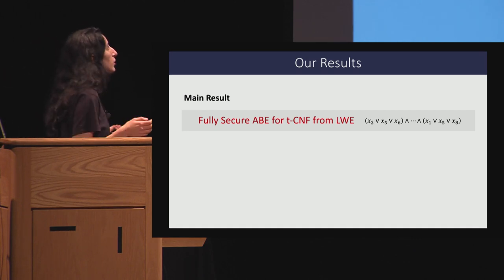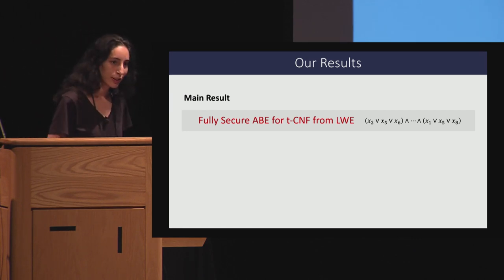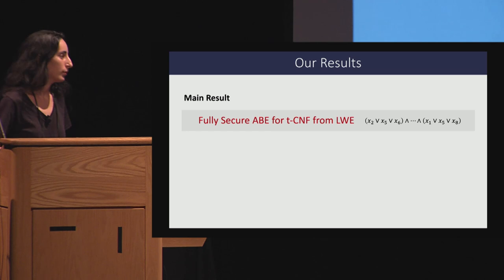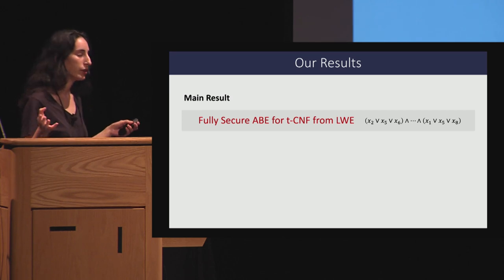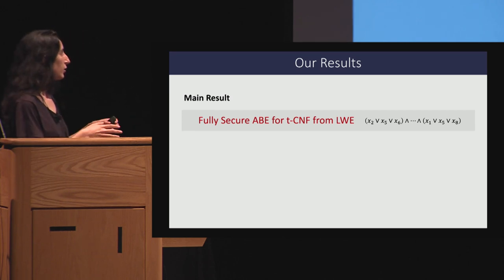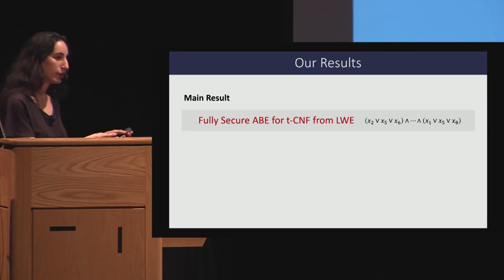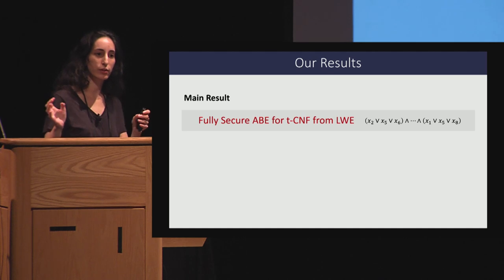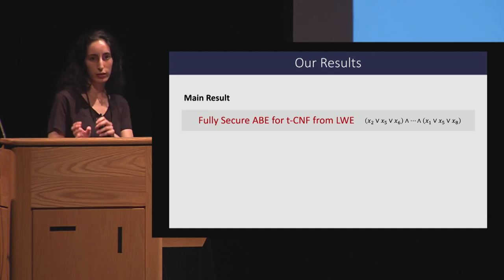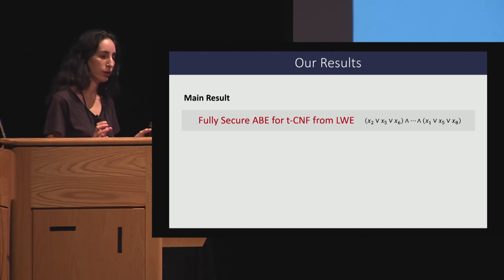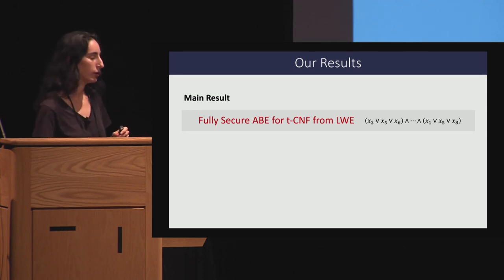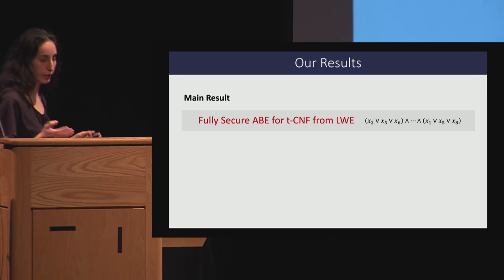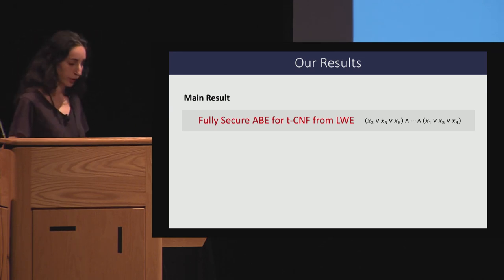We partially solved this problem — we show a fully secure ABE based on the LWE assumption, and the supported function class is what we call TCNF, which is CNF formulas with constant locality of the clauses. Each clause can access only a constant number of bits of the input — for example, 3-SAT is a TCNF formula.